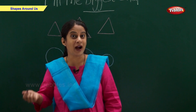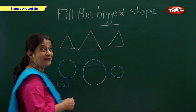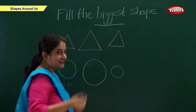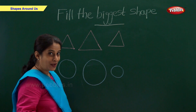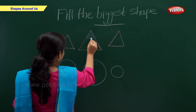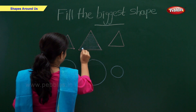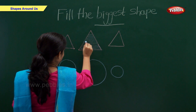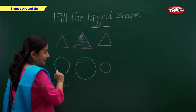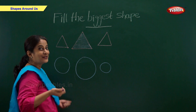Now you have to help me to identify the biggest shape so that I can fill it. I have three triangles — which is the biggest triangle? Tell me fast. Is this the biggest? Or this? Or this? Right, the second one is the biggest, now let's fill it. And which is the biggest circle? Let's find out — is this the biggest? Or this? Or this? Right, this is the biggest, so let's fill it.